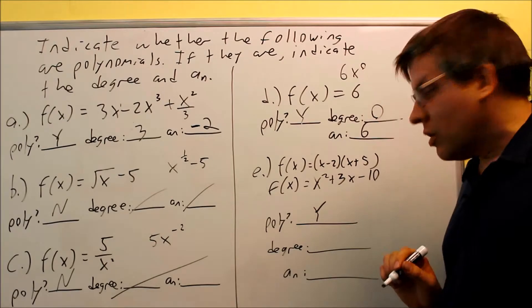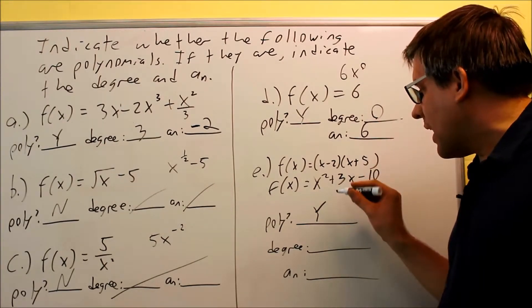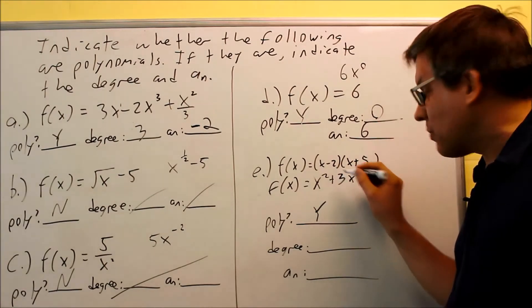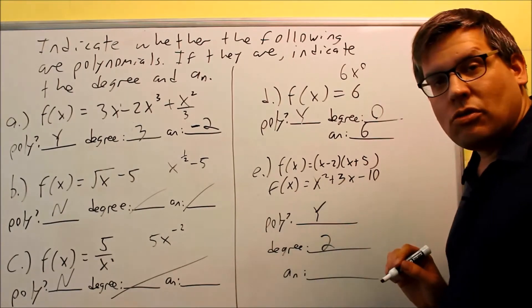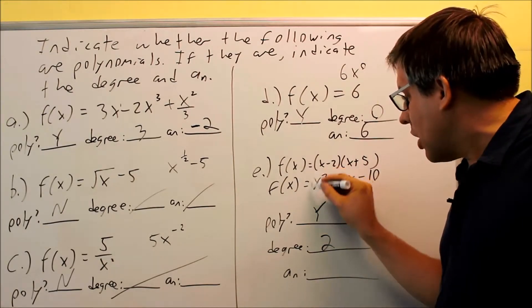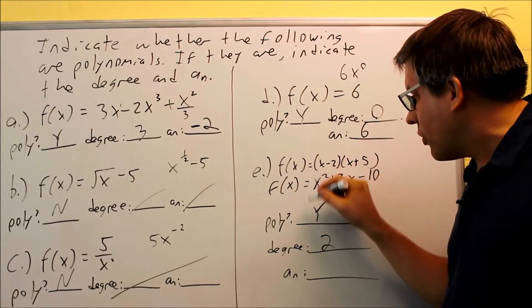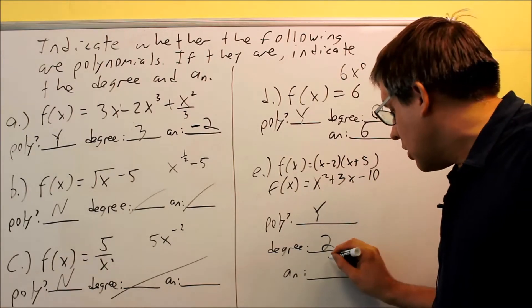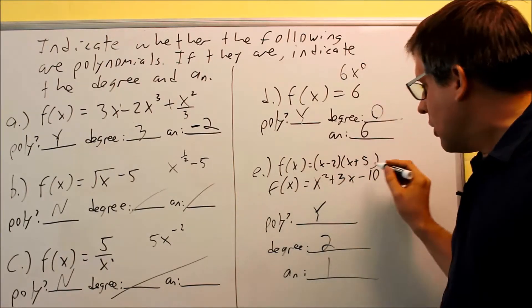Your degree is going to be the highest power that you see here. The highest power is going to be 2. And the a_n is the number that comes in front of the x squared. Well, if there is no number, then that's going to be a 1. So in the future, you might be able to tell by looking at this that it actually is going to be a polynomial.